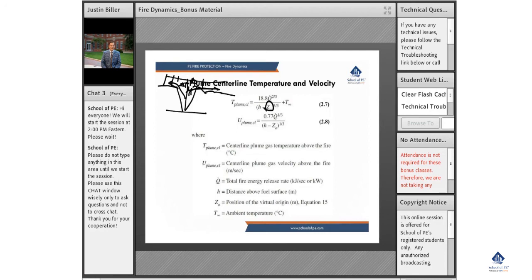That's going to affect how quickly a jet is created and how quickly those gases are going to move through the jet. Again, with velocity, we're a function of the virtual origin, the height of the compartment, and the heat release rate.